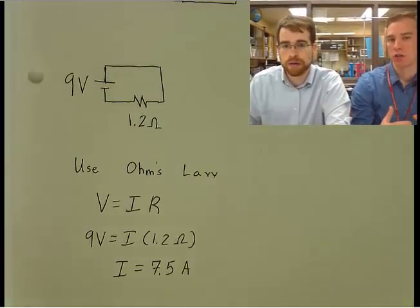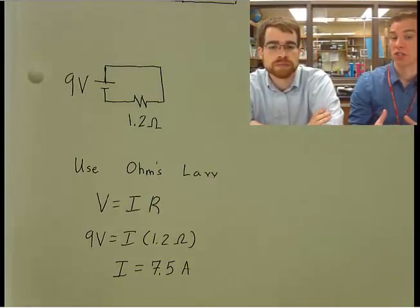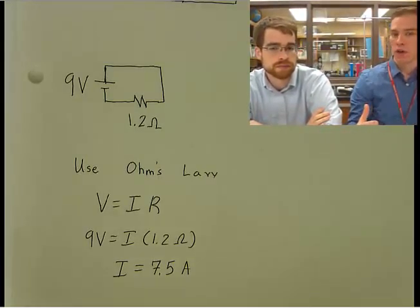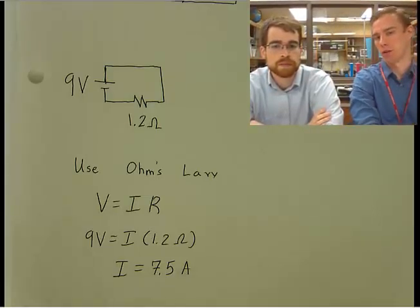The net resistance, and you remember for that series circuit, the combined resistance was 5 ohms. Here we've actually reduced the resistance by putting those resistors in parallel.